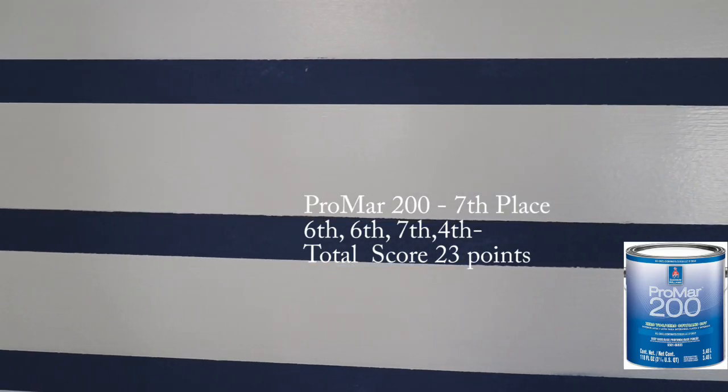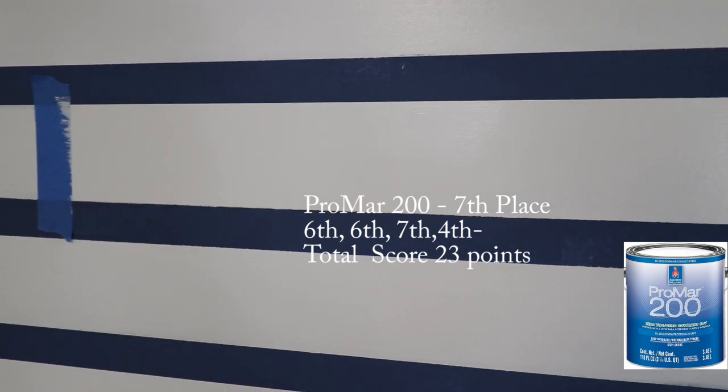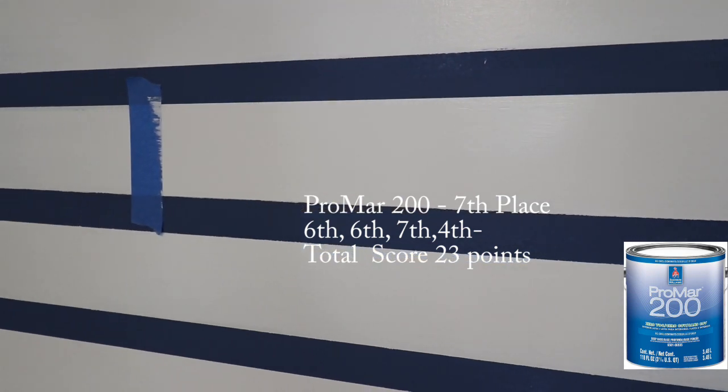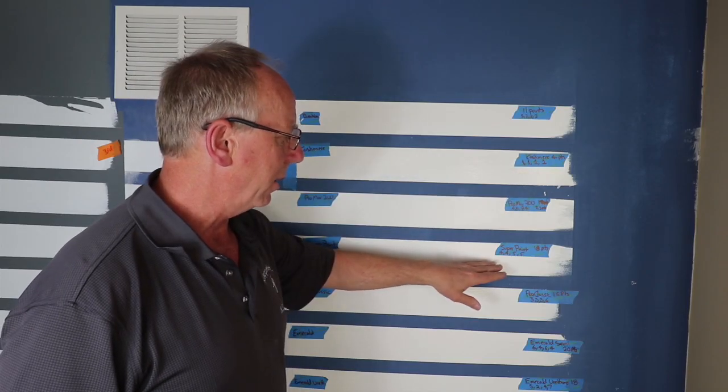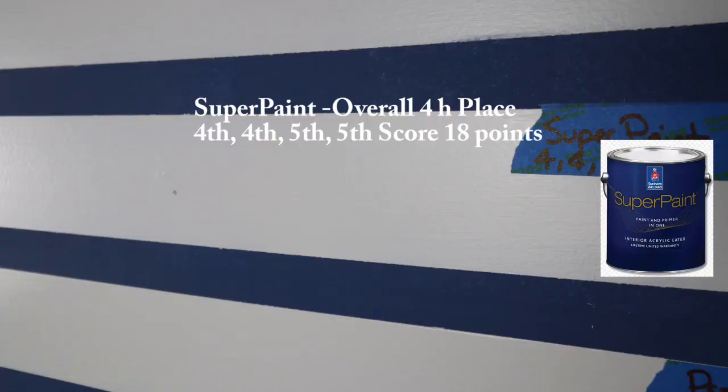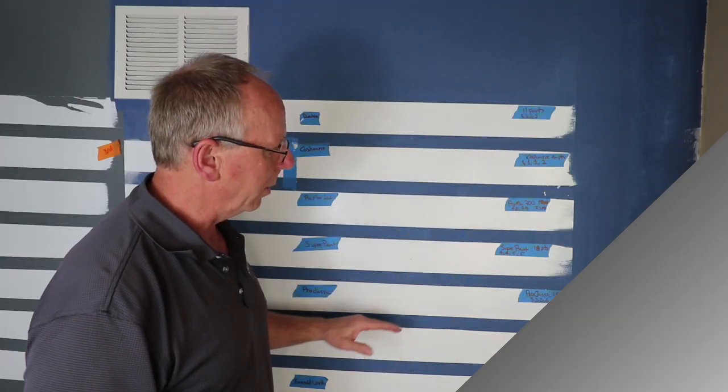The Promar 200 got a 6, a 6, a 7, and a 4 for a score of 23 points. The Super Paint was in the middle of the pack. It got a fourth place, a fourth place, and a fifth place, and a fifth place, so pretty much consistently in the middle, maybe a little in the bottom middle.